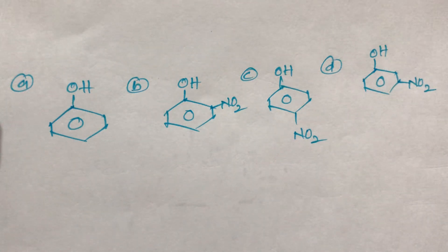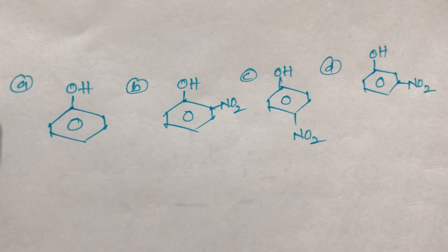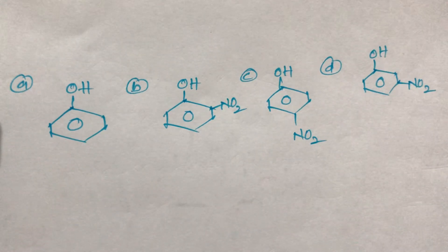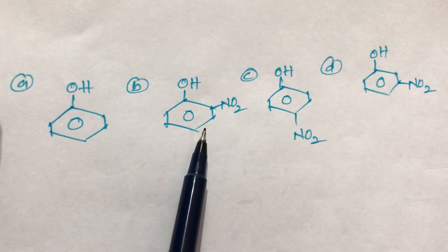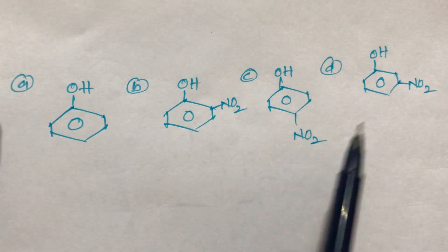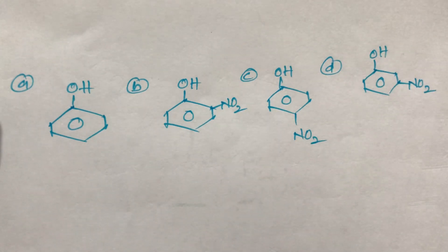Hello students. Next topic: find out acidic strength in phenols. I have given four compounds — first compound is phenol, second compound is ortho-nitrophenol, third is para-nitrophenol, and fourth is meta-nitrophenol. Out of these four, which one is more acidic and which one is less acidic?